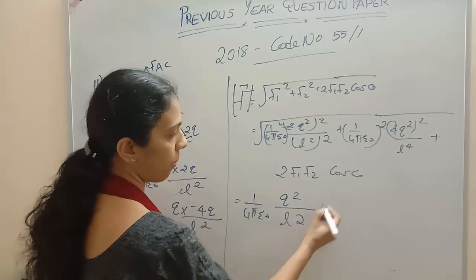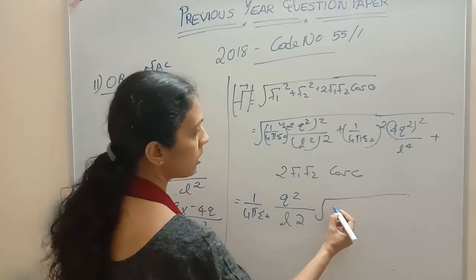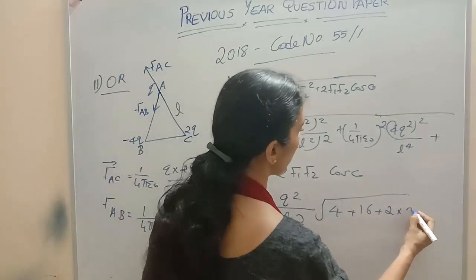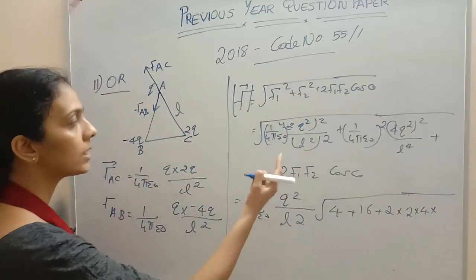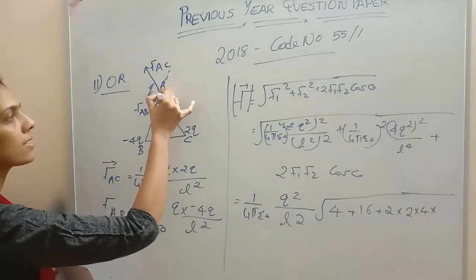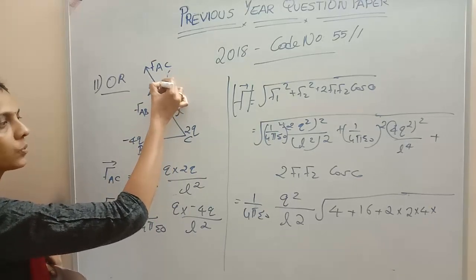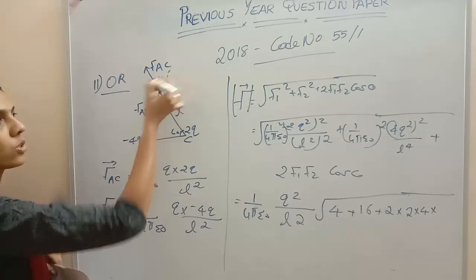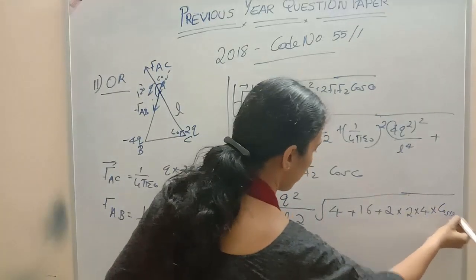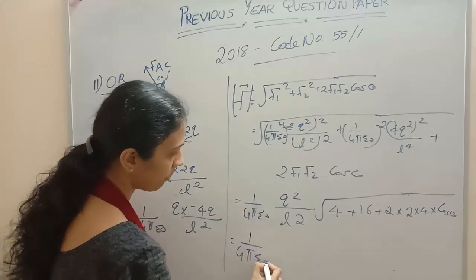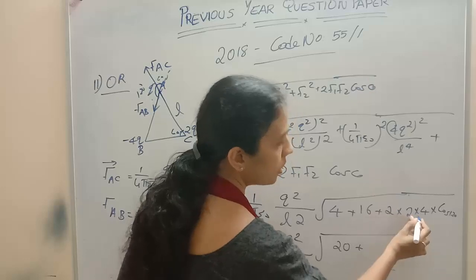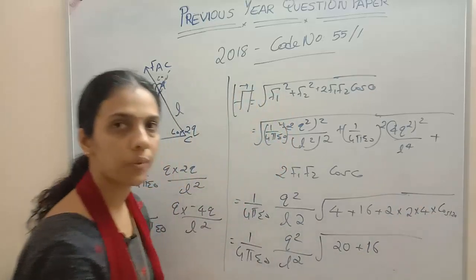Taking Q square by L square common and taking the square root, it will come out as 1 by 4 pi epsilon 0 times Q square by L square. Inside the root: 2 squared is 4, and here 16 will come, and 2 into F1 F2 means 2 into 2 into 4 inside, times cos theta. The angle between FAC and FAB — we know this is 180 degrees and the equilateral triangle angle is 60 degrees, so the angle between the forces will be 120 degrees.